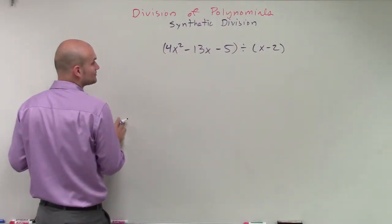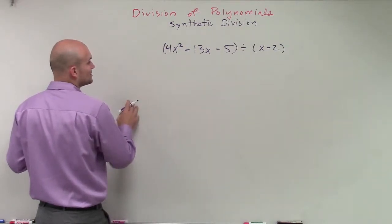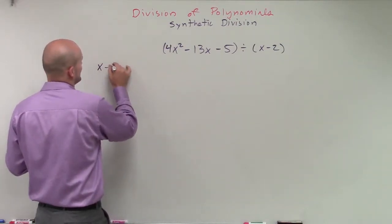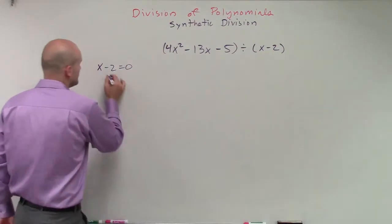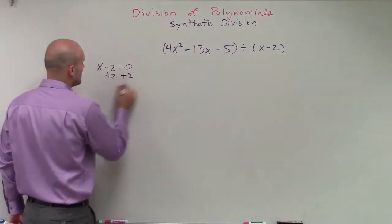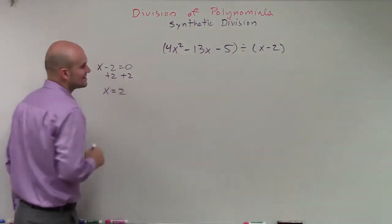Then the next thing that we're going to do is we are going to take our divisor and set it equal to 0. Then we solve for our value of x. And therefore, we can see x equals 2.